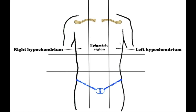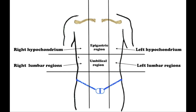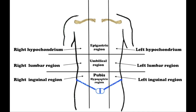The epigastrium is divided into a right hypochondriac region, a middle epigastric region, and a left hypochondriac region. The middle abdomen is divided into the right lumbar region, the middle umbilical region, and the left lumbar region.